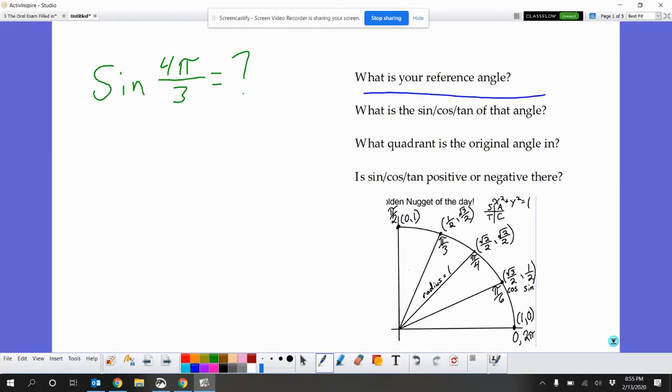So first question is, what is your reference angle? Your reference angle is just whatever your fraction is without that number in the numerator. So in this case, it's pi over 3.